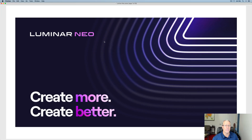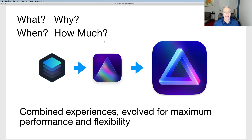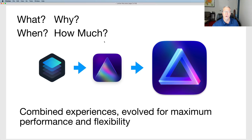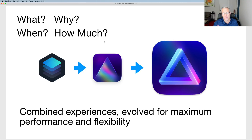Let's talk about Luminar Neo — what it is, what it's all about. In very simple terms, what they've done is they took the best parts of Luminar 4 and the best parts of Luminar AI and put them together to get Luminar Neo. One of the things people loved about Luminar 4 was layers, but because of how Luminar AI was architected, it would not support layers — they literally could not put them in there.